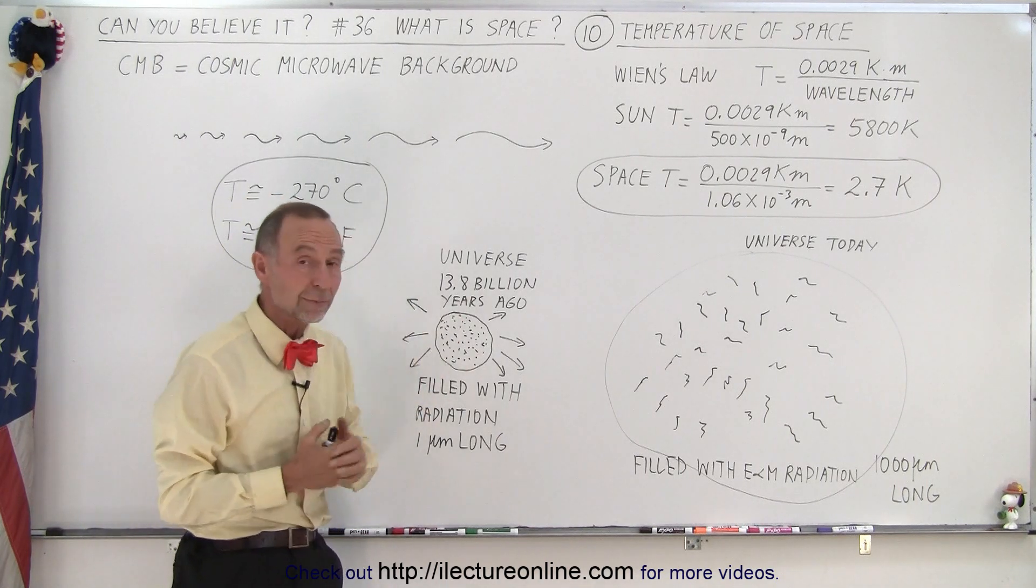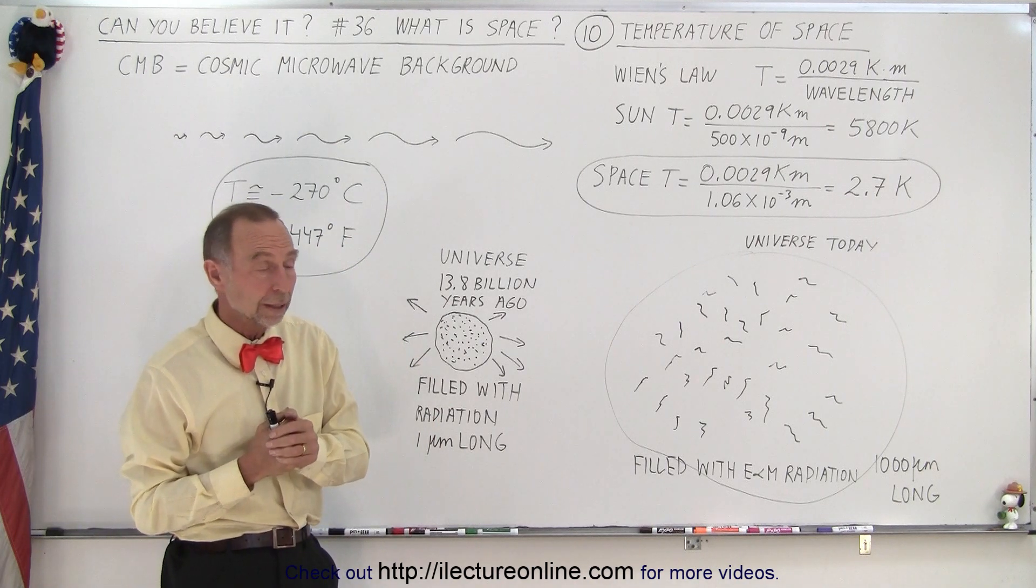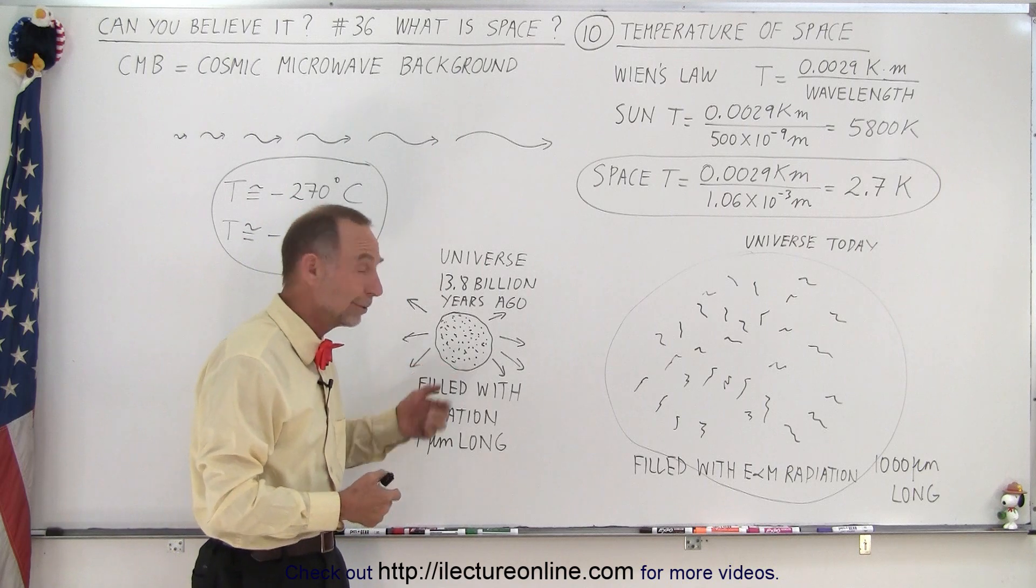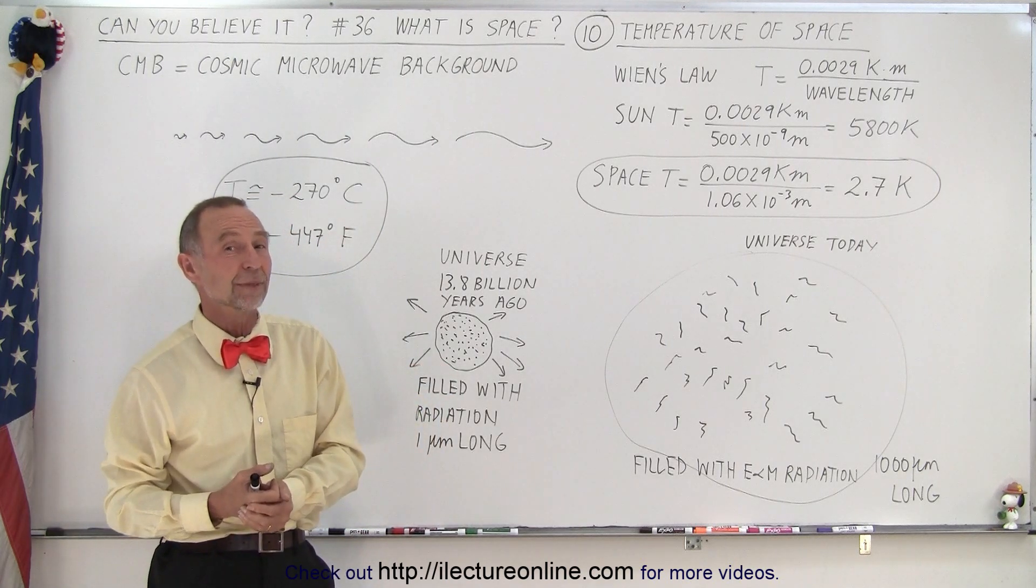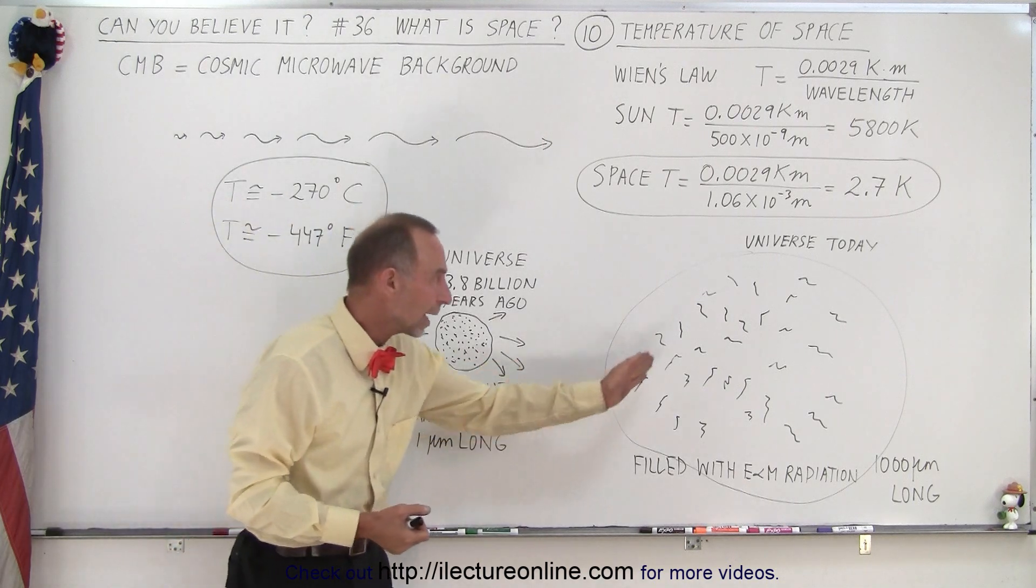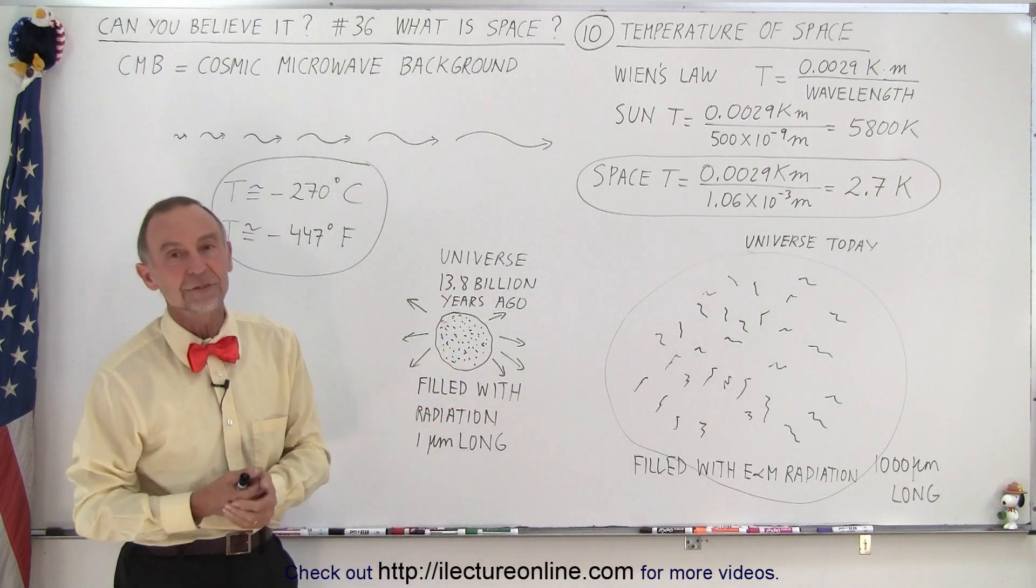However, we go back 13.8 billion years ago, at the decoupling of matter and energy, well, the universe at that point was about 3000 Kelvin. 3000 Kelvin, that's pretty hot. And it's been cooling down to about 2.7 Kelvin today.